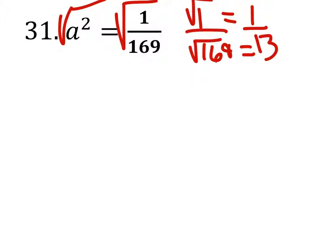oh, I'm supposed to be explaining, okay, so you'd square root that, so the square root of 1 is 1, and then square root of 169 is 13, so then it'd be A equals positive negative 1 over 13.